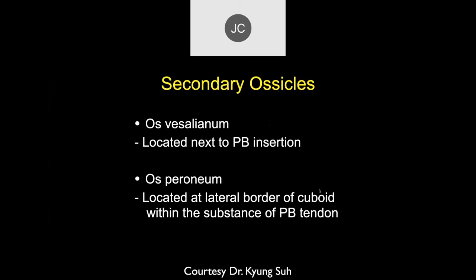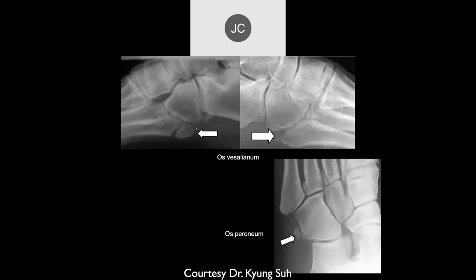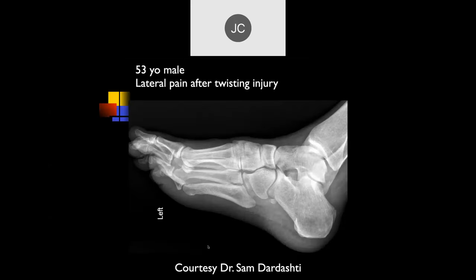There are a bunch of secondary ossicles in this area with variations in size and shape. In many publications these are thought to be congenital variants, but I think the vast majority are actually acquired conditions — and I agree with that.